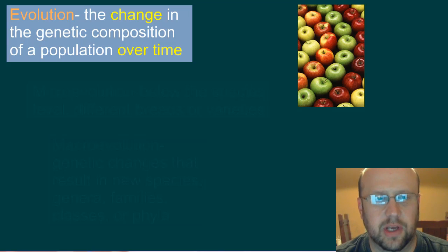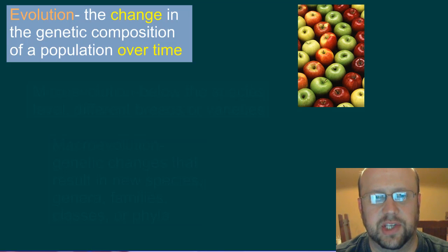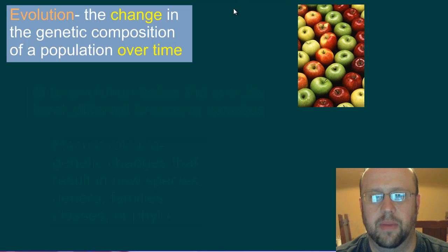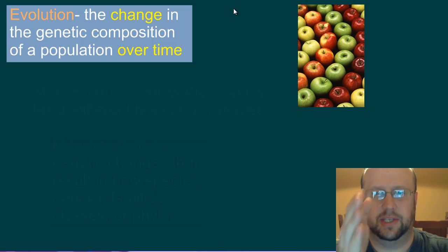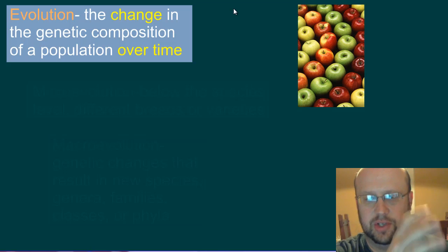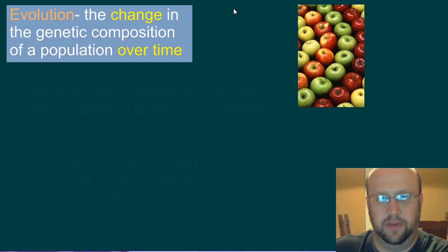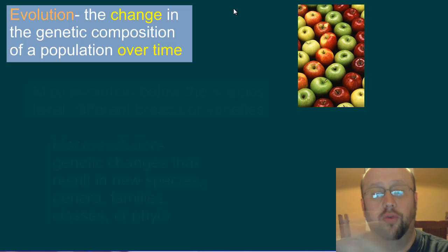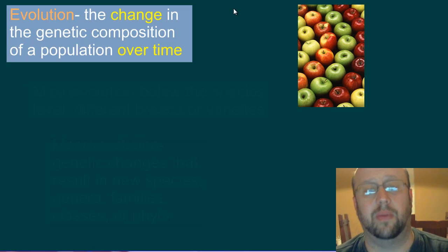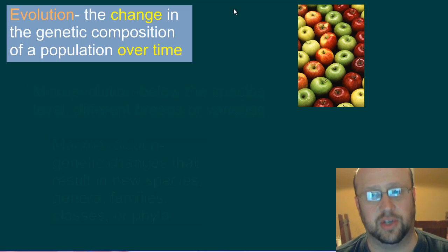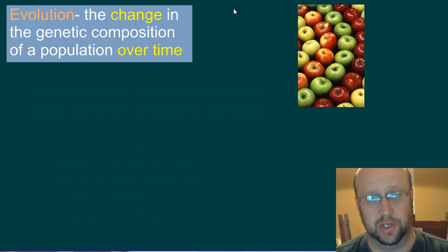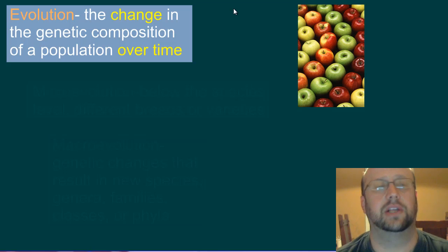In simplest terms, the term evolution just means a change in the genetic composition of a population over time. So there was a certain genotype at one point, and at some point down the line there is a different genotype overall. We're talking about percentages and probabilities in a population as a whole, not necessarily in a specific individual — lots and lots of individuals.